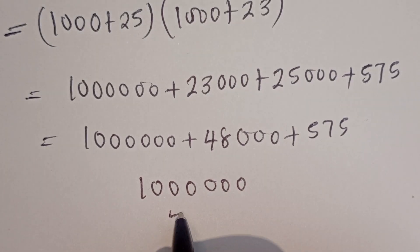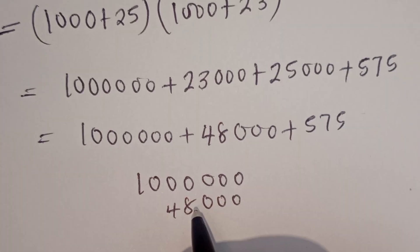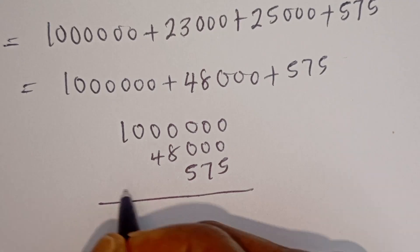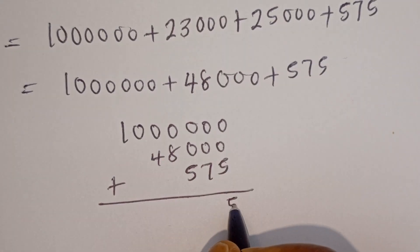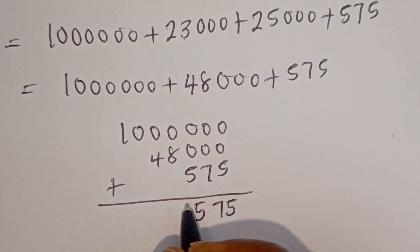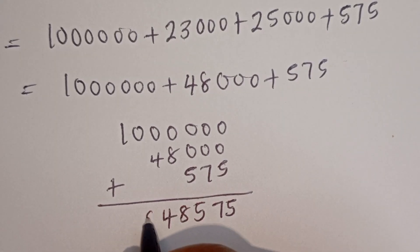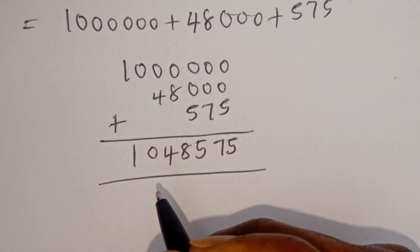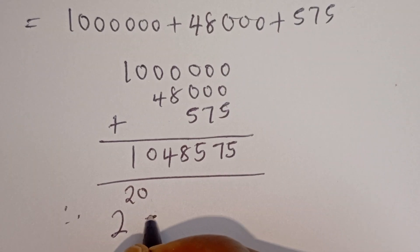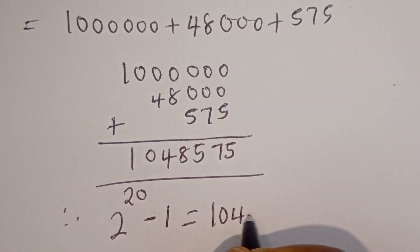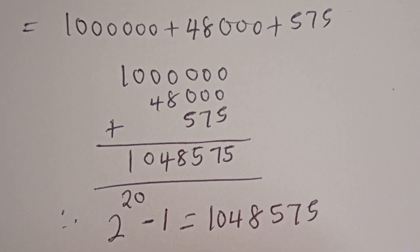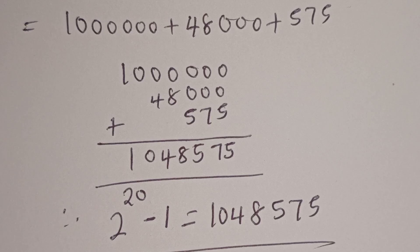Adding together: we have 1,000,000 plus 48,000 plus 575, which gives us 1,048,575. Therefore, 2 to the power of 20 minus 1 is equal to 1,048,575. I hope you enjoyed the video. Thank you for watching. Please don't forget to like, share, comment, and subscribe to my channel. Bye bye.